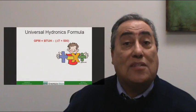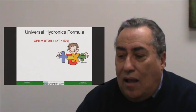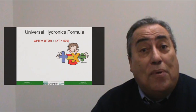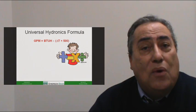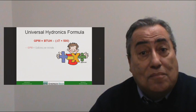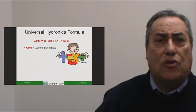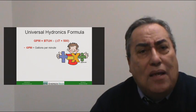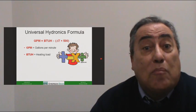Let's take a look at this formula and see what it's all about. The formula is simply this: GPM equals BTUH divided by Delta T times 500. Let's define these terms, starting with GPM—very simple, gallons per minute.